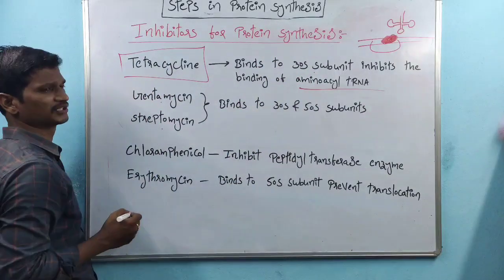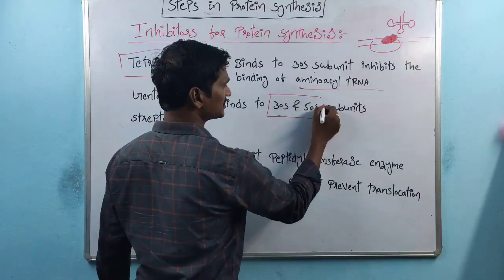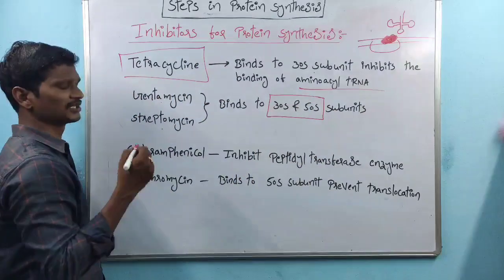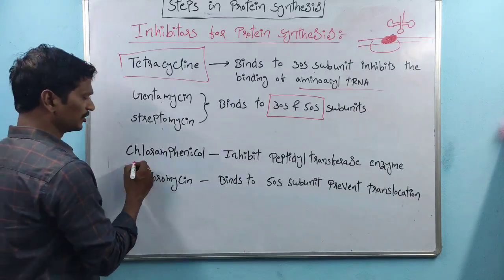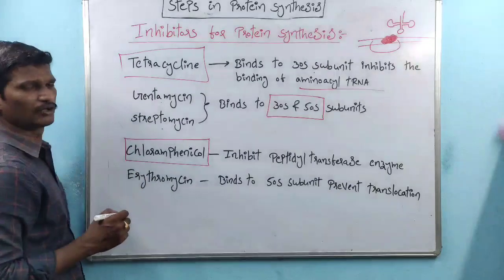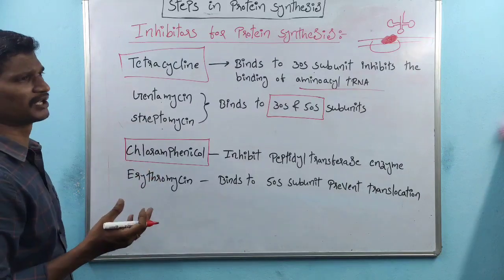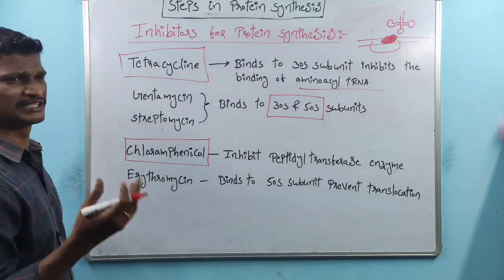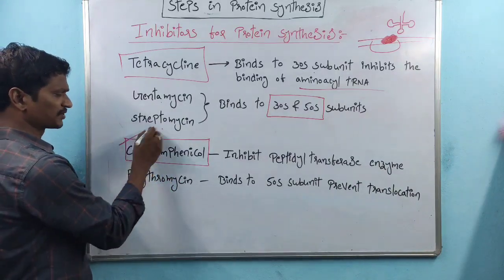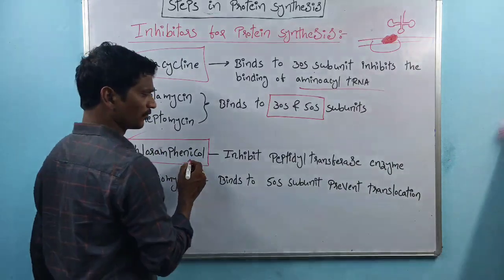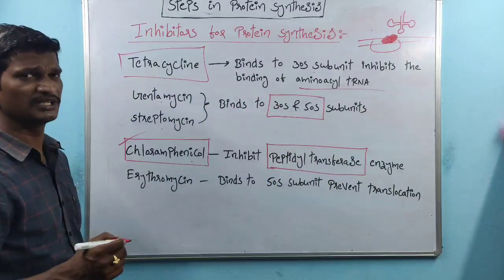Gentamicin and streptomycin bind to both the 30S and 50S subunits of the ribosome, thereby inhibiting protein synthesis. Chloramphenicol is commonly prescribed for bacterial diseases; it inhibits the peptidyl transferase enzyme.